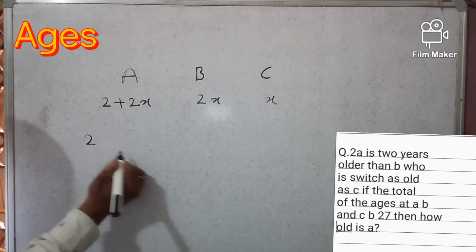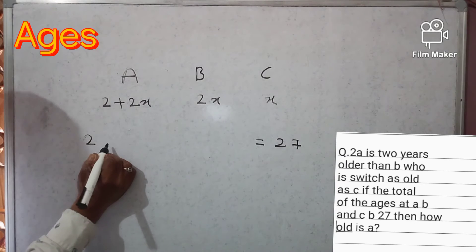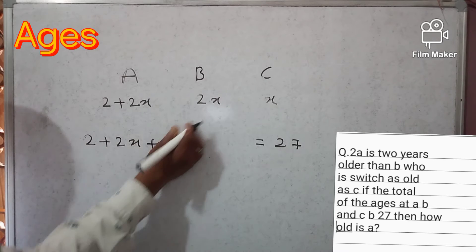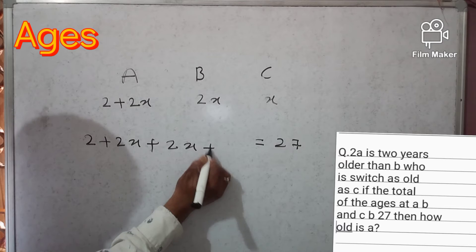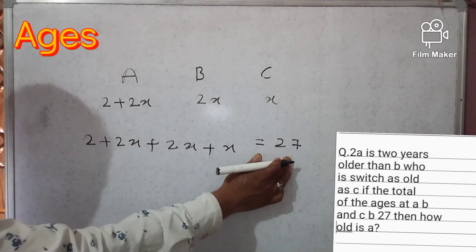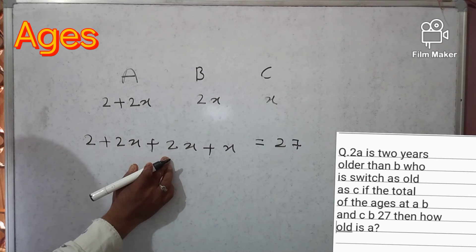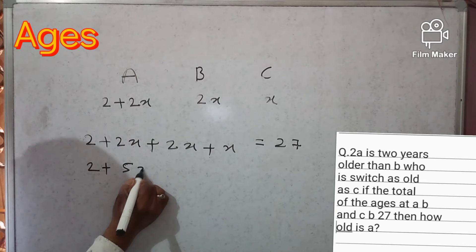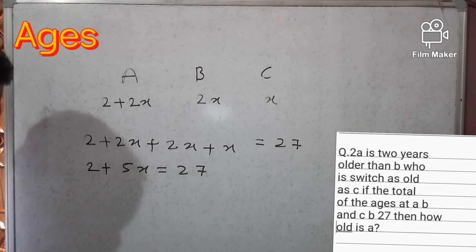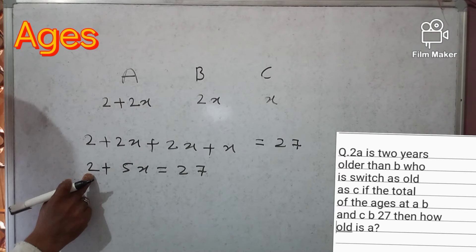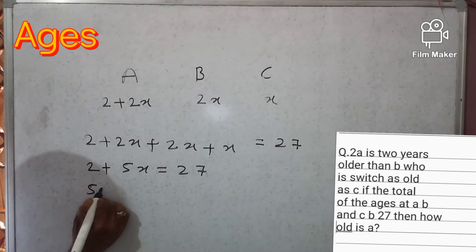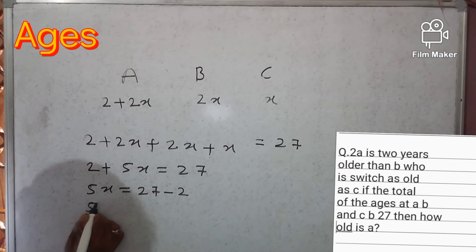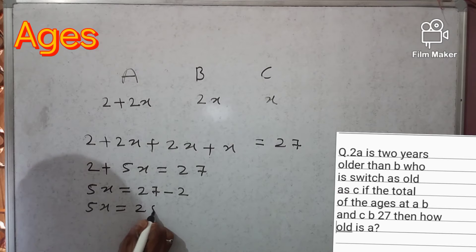Total sum of ages A plus B plus C equals 27. So we add all: A is (2+2x), B is 2x, and C is x, giving us (2+2x) plus 2x plus x equals 27. Simplifying: 2 plus 5x equals 27, so 5x equals 27 minus 2, which equals 25.